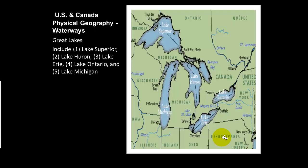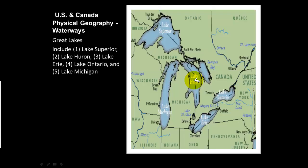Moving to the Great Lakes — they're in the Midwest and are a huge source of commerce between the different regions of the United States and Canada. The Great Lakes also form part of the boundary between the United States and Canada, another example of natural features used as boundaries. The Great Lakes include Lake Superior, Lake Huron, Lake Erie, Lake Ontario, and Lake Michigan.